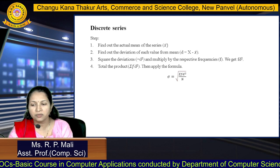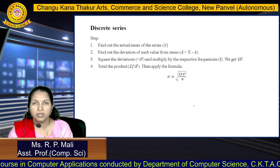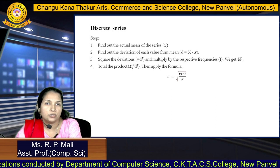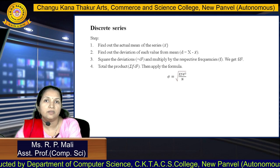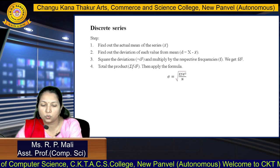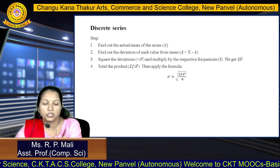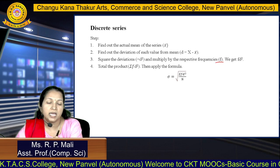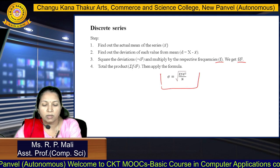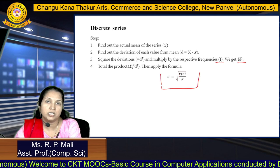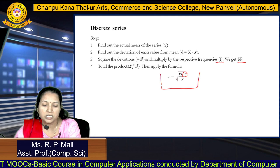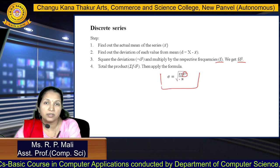Next, we find the standard deviation for the discrete series. The steps are: find the actual mean of the series, find the deviation D equals X minus X-bar, square the deviation to get D-square, then multiply with the frequency F to get F times D-square. The formula is sigma equals square root of summation F D-square divided by N. Find D-square first, then multiply by the frequency.